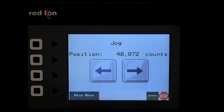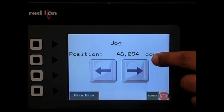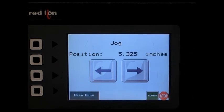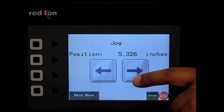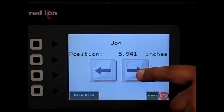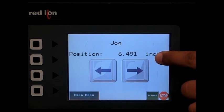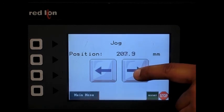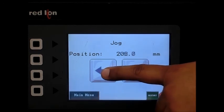Currently, the position is being shown in count. We can change the units if we touch the count. Now the positions are shown in inches. And if we touch inches again, now we have the positions in millimeters.